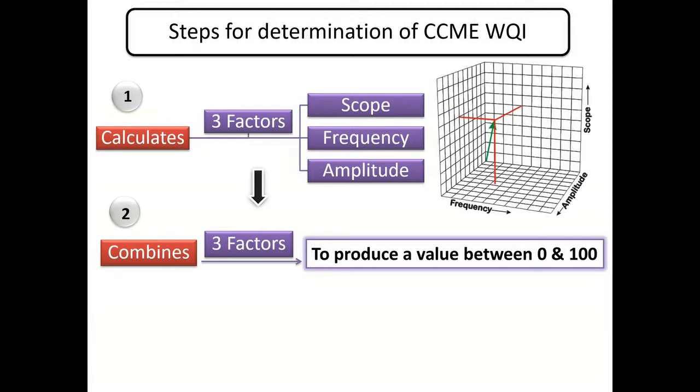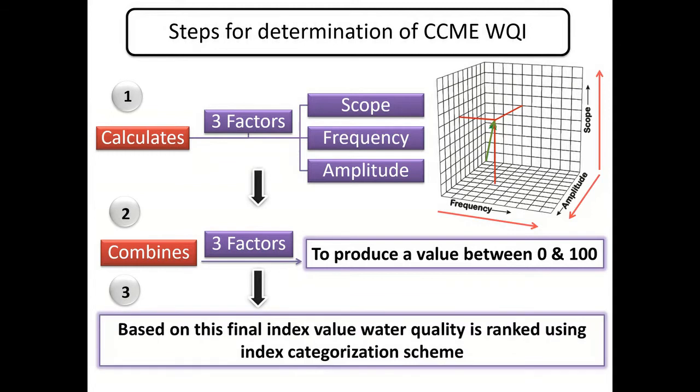This summation is done by vector addition. The adjacent graph represents the summation of the three vector quantities namely scope, frequency and amplitude shown by a green arrow. In the third step, based on the number attained between 0 and 100, water quality is categorized based on five descriptive categories to represent it in an understandable way.